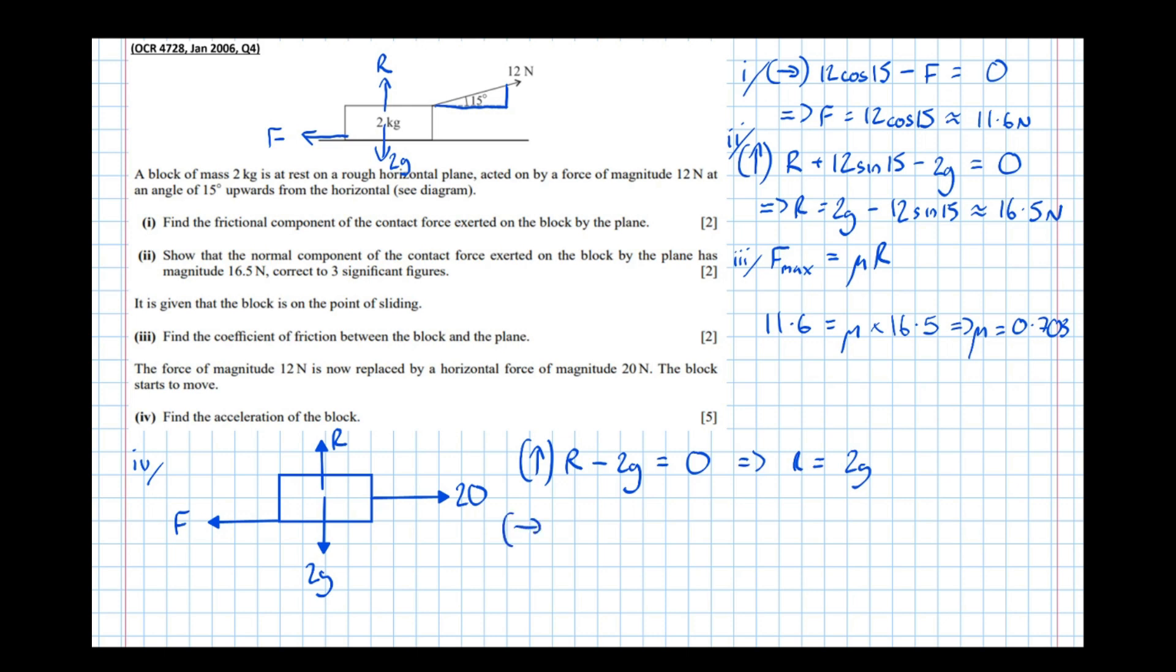Let's resolve horizontally. Now we know the friction's at a maximum, because it's gone beyond the point of slipping. Friction put up its best effort, but the 20 Newtons beat it. So I'm going to call that F_max. The friction is maximum. And we know that the maximum friction equals μR.